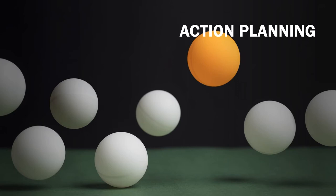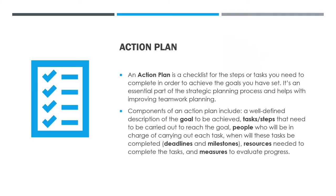The next approach is action planning. An action plan is a checklist for the steps or tasks you need to complete in order to achieve the goals you have set. It is an essential part of the strategic planning process and helps with improving teamwork planning. Components of an action plan include a well-defined description of the goal to be achieved, tasks or steps that need to be carried out to reach the goal, people who will be in charge of carrying out each task, deadlines and milestones, resources needed to complete the tasks, and measures to evaluate progress.